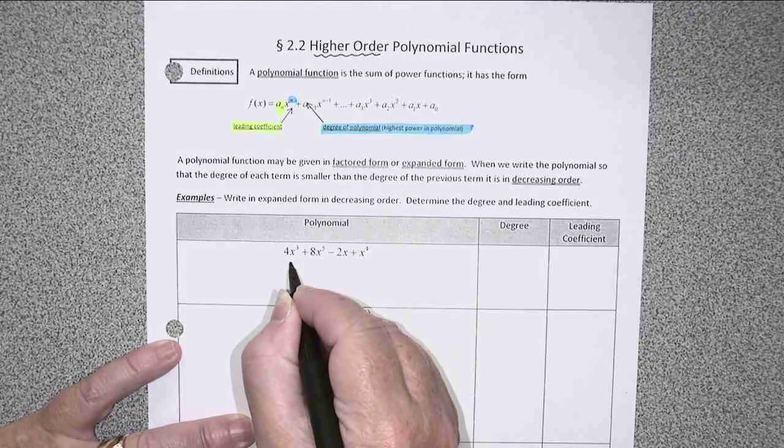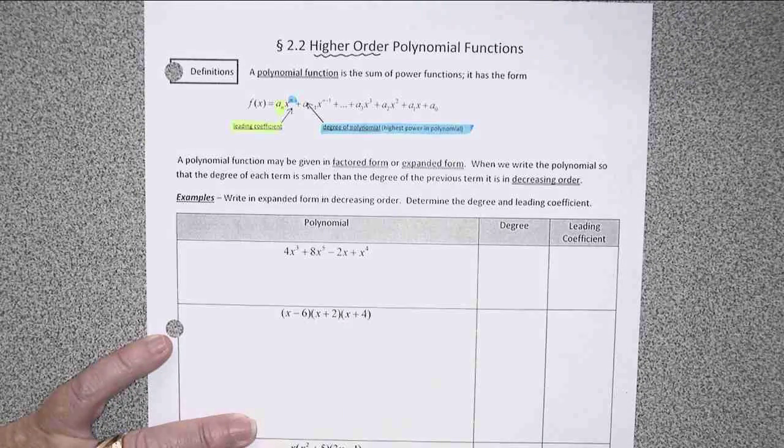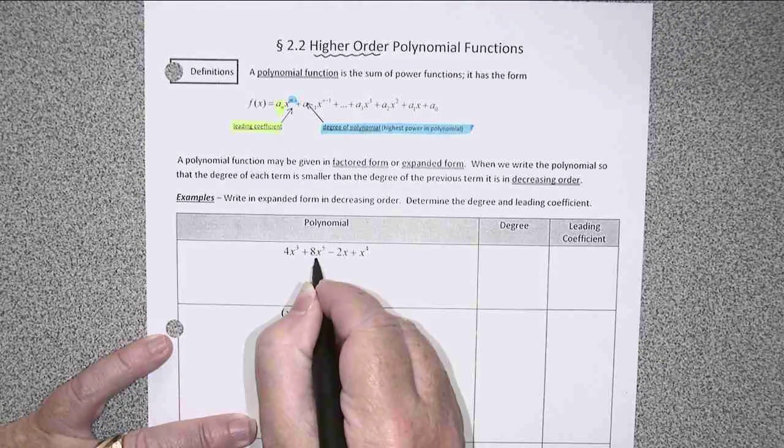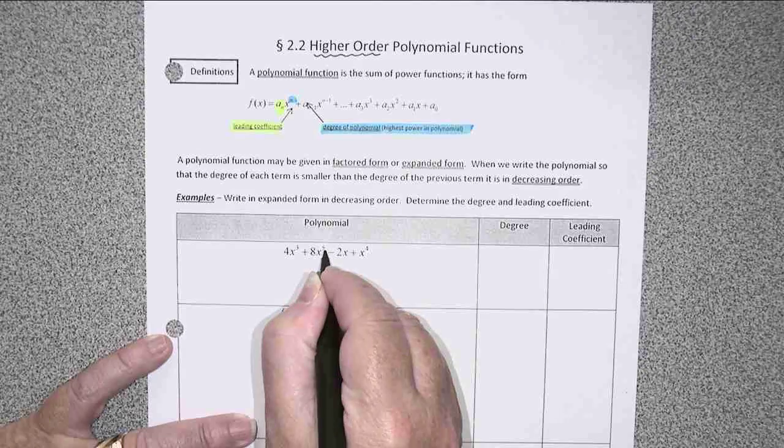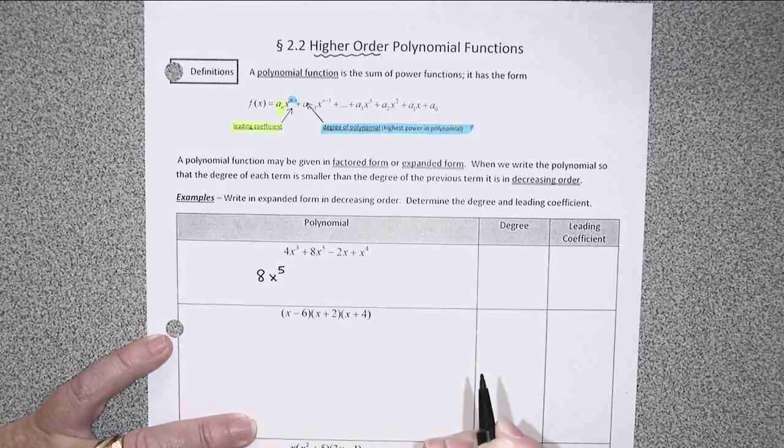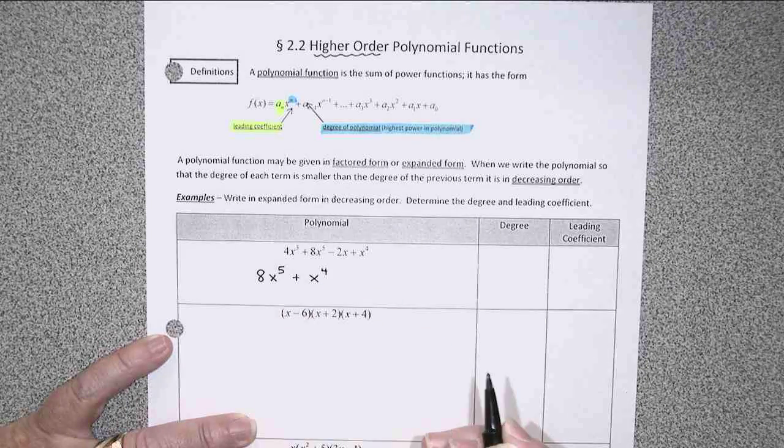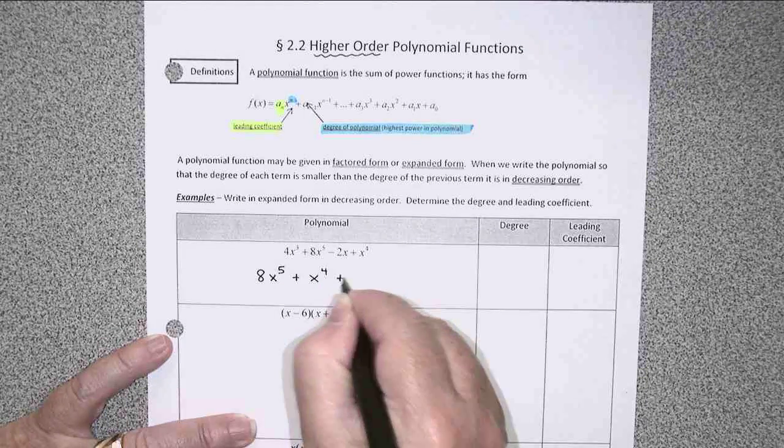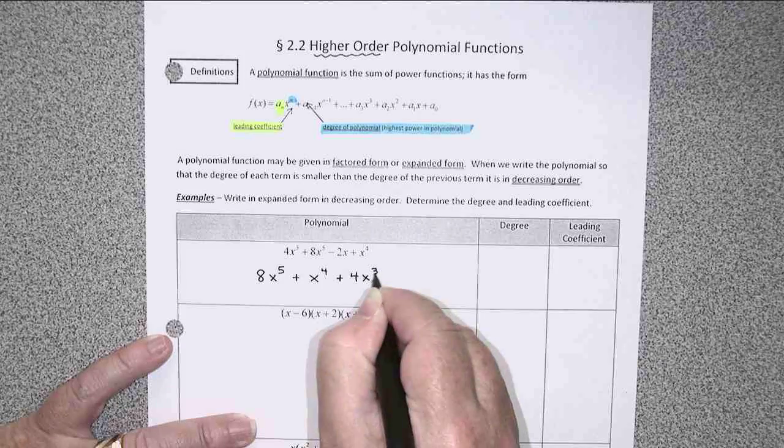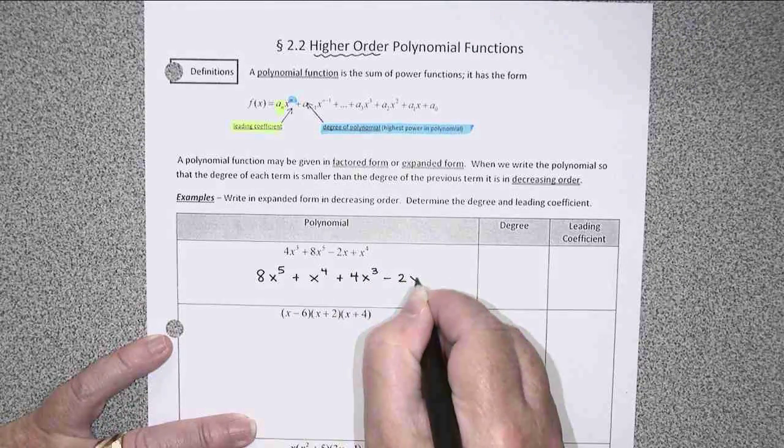In the first problem, there's nothing to multiply out. It's already expanded, so I'm just going to rearrange my terms. The highest power is that fifth power, so I'll start with 8x to the fifth, and then I'll work my way down, plus x to the fourth, and the next biggest would be plus 4x to the third, and then the last one would be the negative 2x.